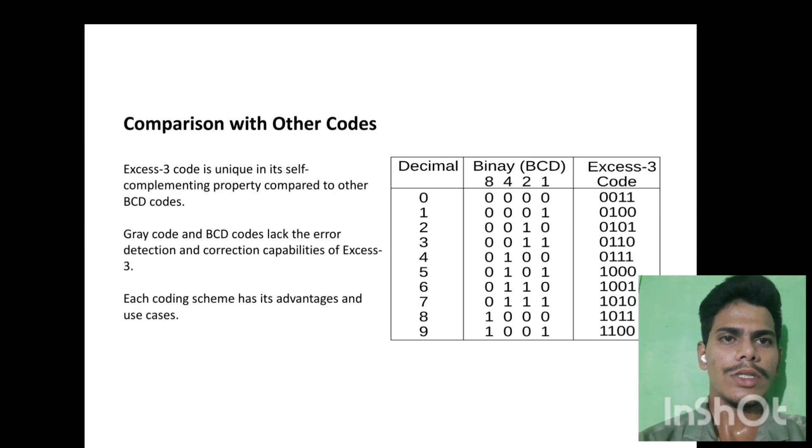XS3 code is unique in its self-complementing property compared to other BCD codes. Gray code and BCD codes lack the error detection and correction capabilities of XS3. Each coding scheme has its advantages and use cases.